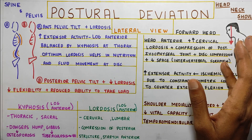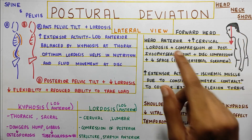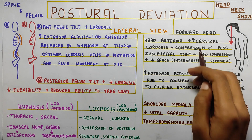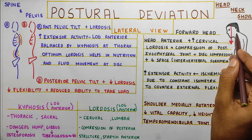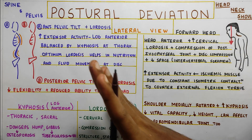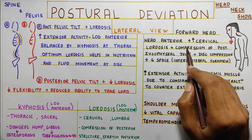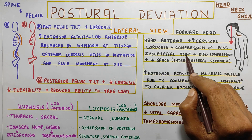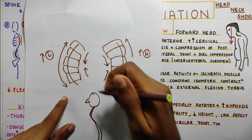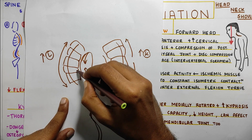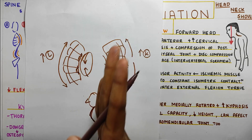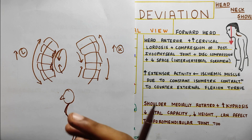Moving ahead to the head — forward head posture. Here the head goes anteriorly, which creates excessive cervical lordosis. The spine goes into lordosis in the cervical region, which creates compression of the posterior zygapophysial joints and the disc. Basically the space in the posterior region, with all the discs and facet joints, will be compressed because of the excessive lordosis, and this can create problems.